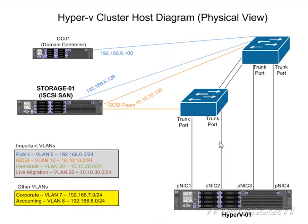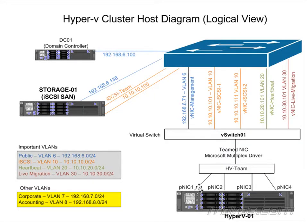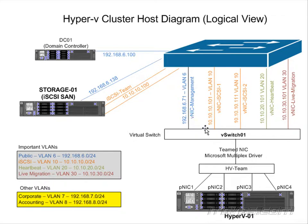Now let's look at the logical view. We're going to have four physical NICs, just like in our physical view, but we're going to team them, which will create one logical network adapter called HV-team. That logical network adapter will show up as a Microsoft multiplex driver. We're then going to create a virtual switch and connect that teamed adapter to it. You'll see physical network adapters labeled PNIC and virtual network adapters labeled VNIC — this helps avoid confusion, especially when working through PowerShell.